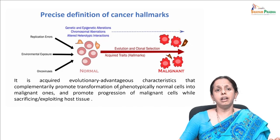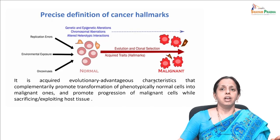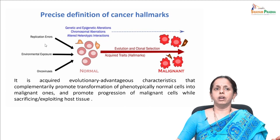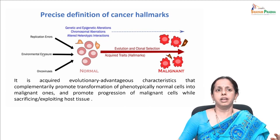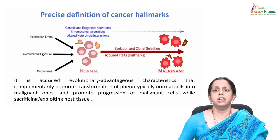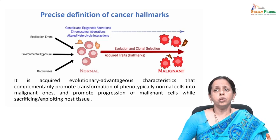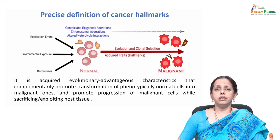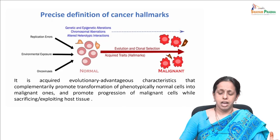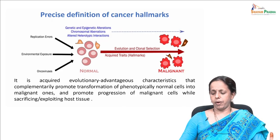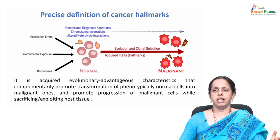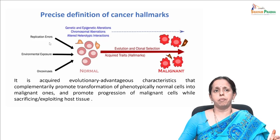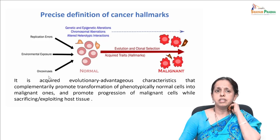It is a very typical advantageous characteristic of cancer cells. During the transformation process, there will be many insults — a transformation which causes a normal cell to become a cancer cell. These insults continuously act on cells, leading to transformative alterations and chromosomal rearrangements. This could be due to environmental exposure, replication errors, or oncoviruses, which we have discussed earlier.